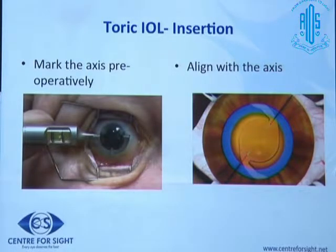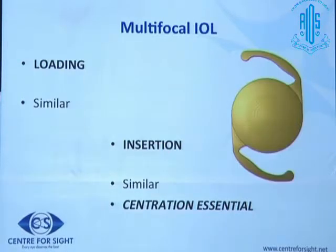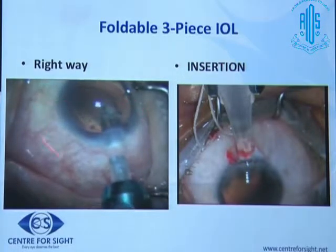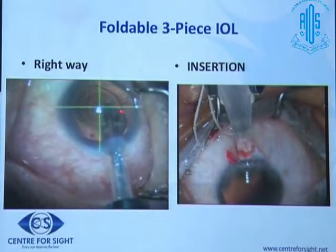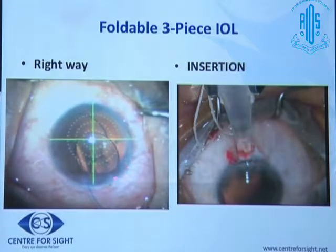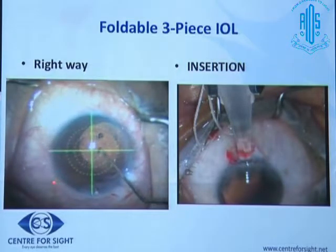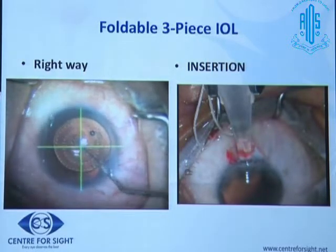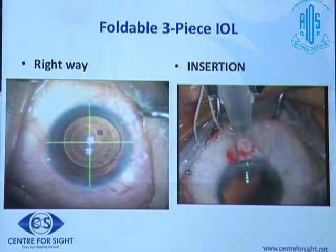For toric intraocular lenses, if doing a manual technique you should mark the eyeball for toric alignment before surgery. Multifocal and toric lenses have similar loading and insertion, but centration needs to be very precise. For a three-piece lens with viscoelastic in place, once the lower haptic is positioned you pronate your hand, leaving the trailing haptic outside, and gently dial it in. Three-piece lenses are normally more difficult to place and typically require a Macrerson or a dialer.